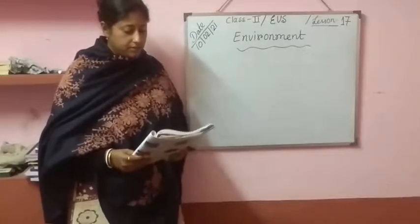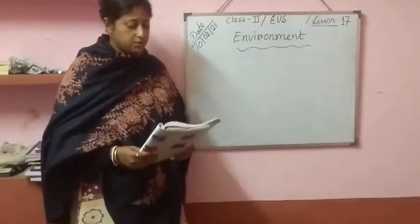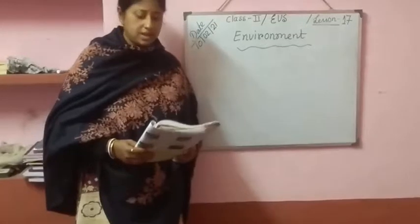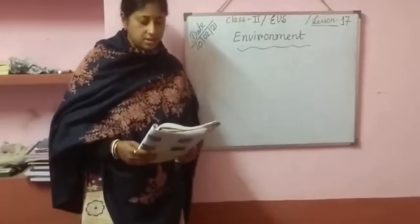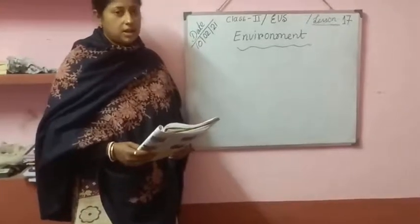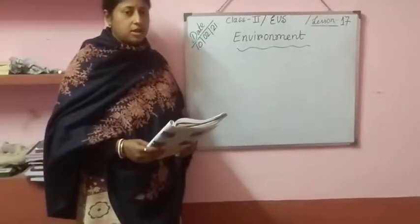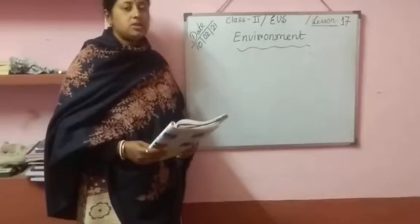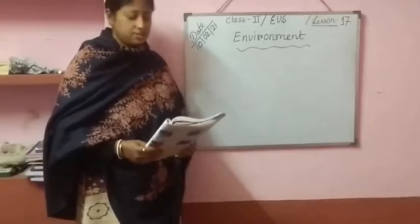Where do we live? First of all, we live on planet Earth — the third planet. How many planets are in our solar system? 8 planets.